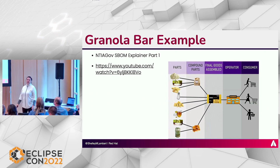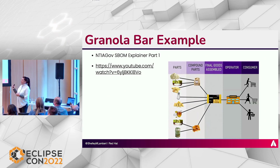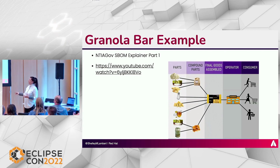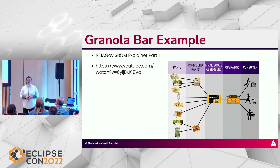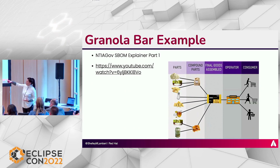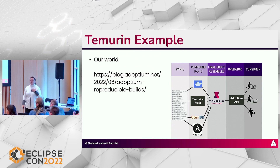There's a wonderful set of explainer videos I highly recommend checking out. In one video, they use a granola bar as the final good that gets assembled and sent out to an operator — the market — and then to consumers. When you look at the list of ingredients, it's built from compound parts that can be broken down further. The granola bar had salt and honey as individual units, but also oats and caramel, which could each be broken down into more components.